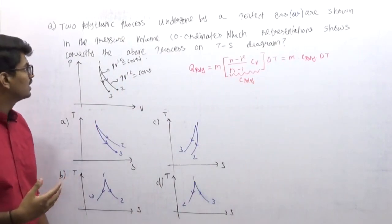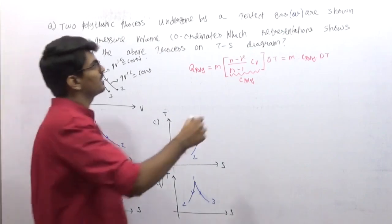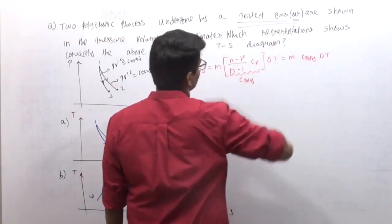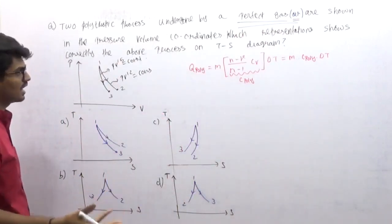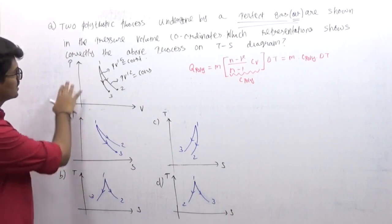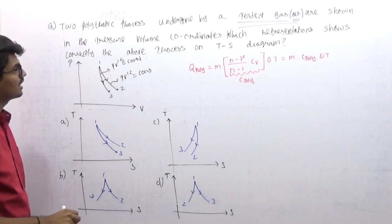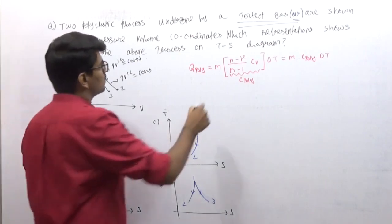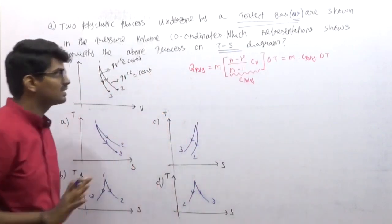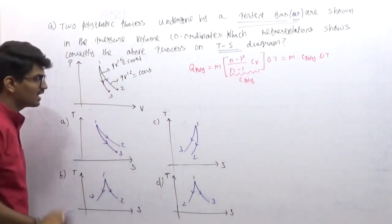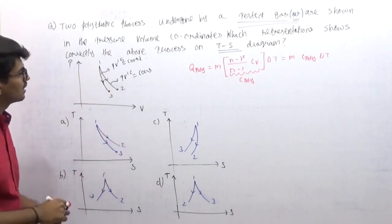Two polytropic processes undergone by a perfect gas — given that it is air, an ideal gas — are shown in the pressure-volume coordinate. The question asks which representation correctly shows these two processes on a TS diagram, with options A, B, C, and D given.